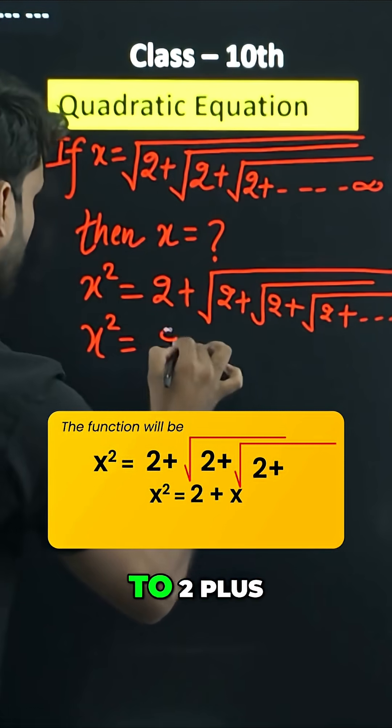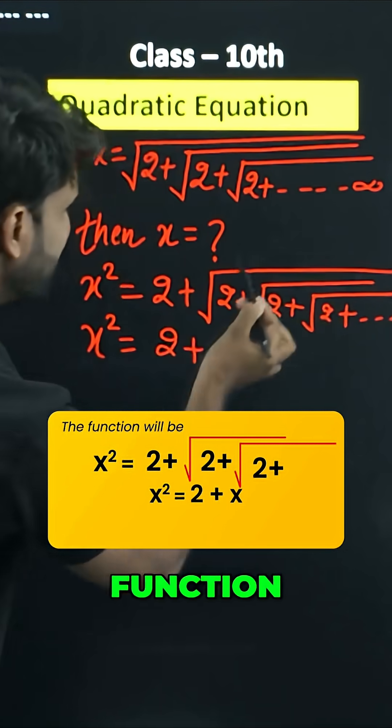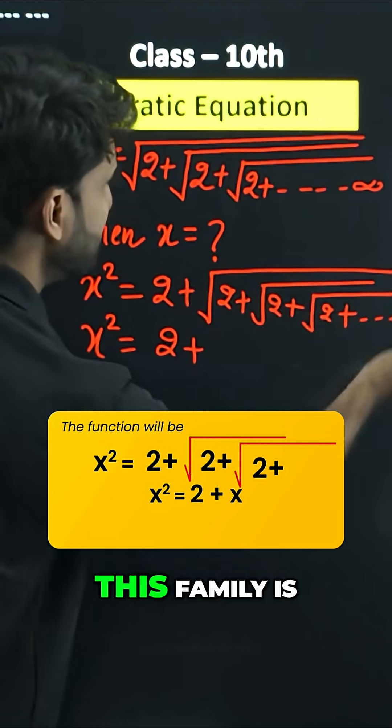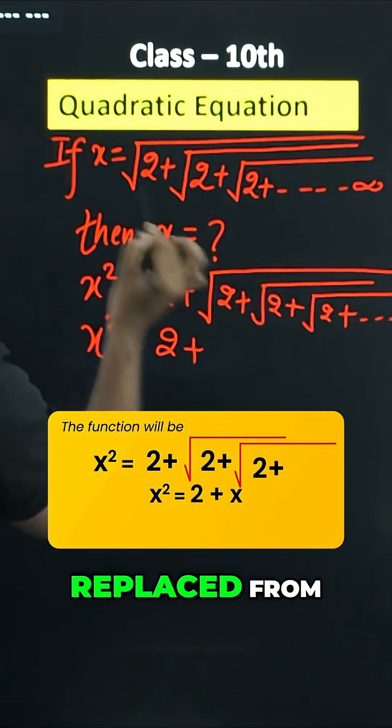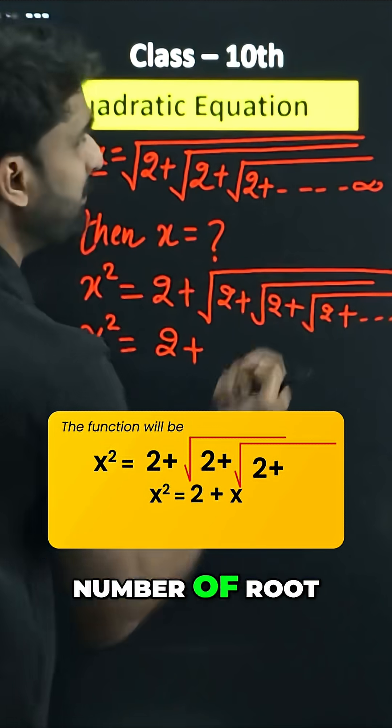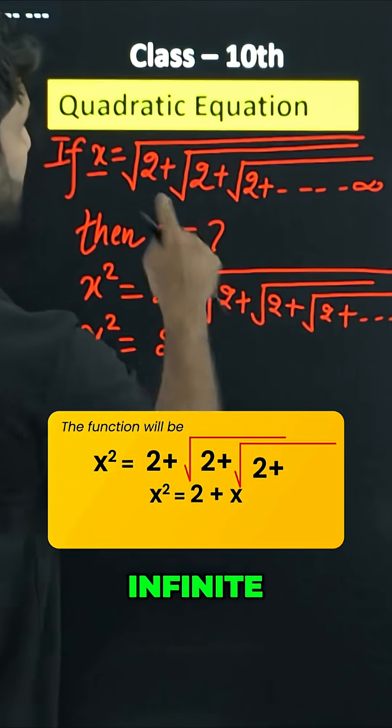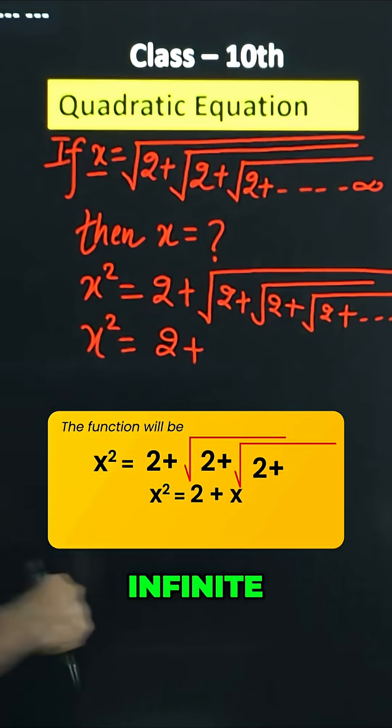x square equals to 2 plus, and look at this function, look at this family here. This family is just like x. This can be replaced from x because here the number of root 2 is infinite and here the number of root 2 is again infinite. So what you need to do is replace this whole family with x.